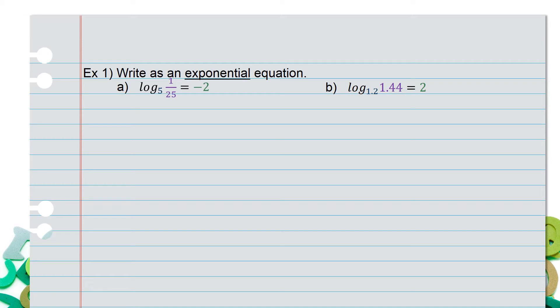Example 1: write as an exponential equation. For part a, we have log base 5 of 1/25 equals negative 2. We're not trying to solve anything — we're just changing the notation. So instead of seeing log, I want my base, 5, raised to the power of negative 2, equals 1/25. That is your exponential equation.